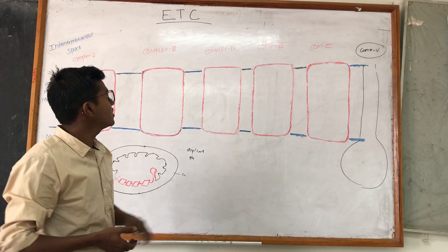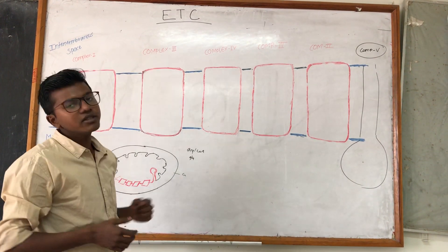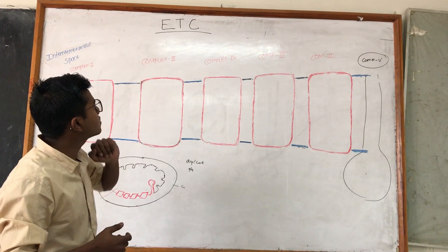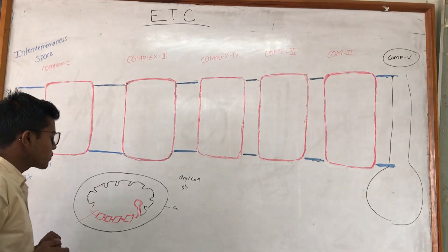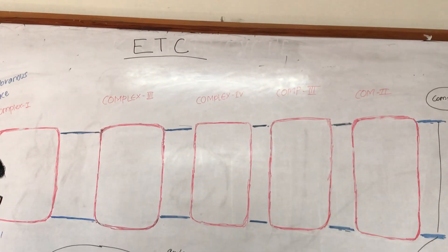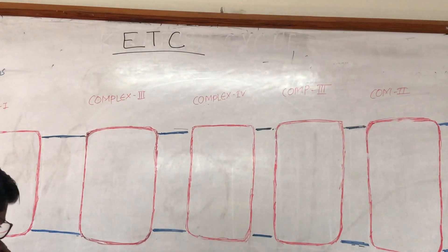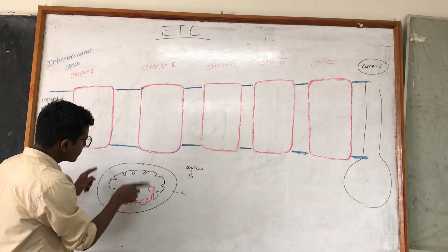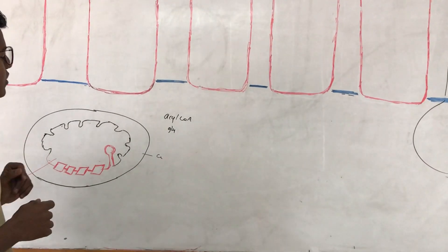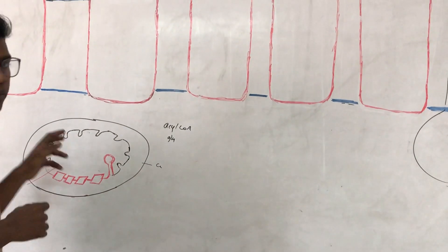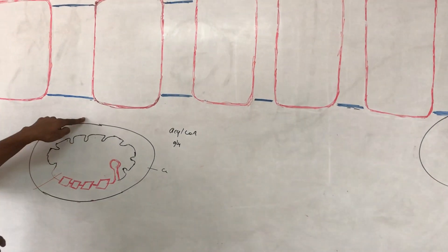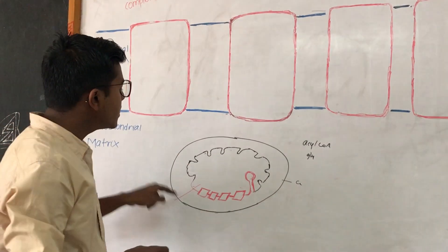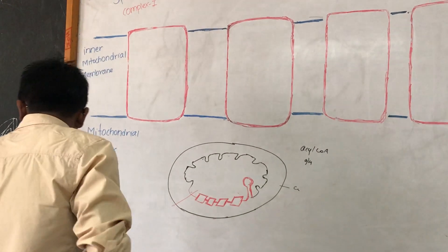Welcome to Akash Tutorial. Today we will be dealing with electron transport chains. Before going into the electron transport chains, we will review a brief structure of mitochondria. Mitochondria is enveloped by two membranes: one outer membrane and one inner membrane, and the inner membrane is folded to form cristae.